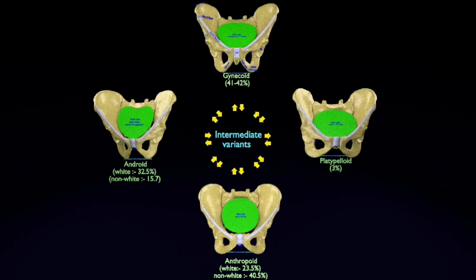The pelvis is the lower part of the trunk between the abdomen and the thigh. The pelvic skeleton is formed in the area of the back by the sacrum, the coccyx, and anteriorly and to the left and right sides by a pair of hip bones: the ileum, the ischium, and the pubis.